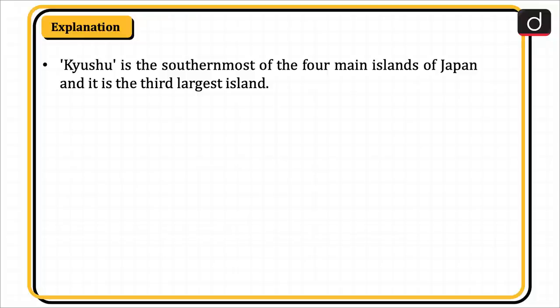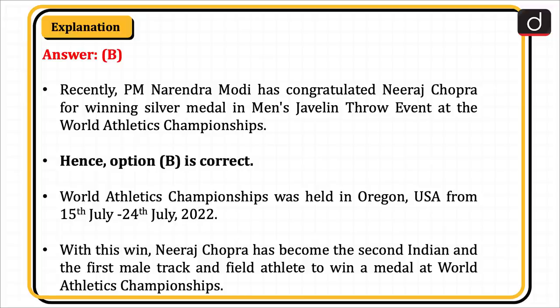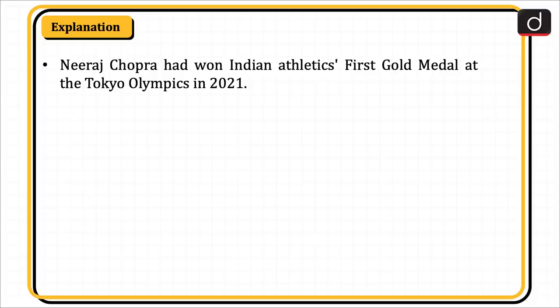Kyushu is the southernmost of the four main islands of Japan and is the third largest island. Next question: which medal has Neeraj Chopra won in the final of the Javelin Throw event at the recent World Athletics Championships? Bronze medal, silver medal, gold medal, or none of the above? The correct answer is option B, silver medal. Prime Minister Narendra Modi congratulated Neeraj Chopra for winning the silver medal in the men's Javelin Throw event at the World Athletics Championships, held in Oregon, USA from 15th to 24th July 2022. With this win, Neeraj Chopra became the second Indian and the first male track and field athlete to win a medal at the World Athletics Championships. He had also won India's first gold medal in athletics at the Tokyo Olympics in 2021.